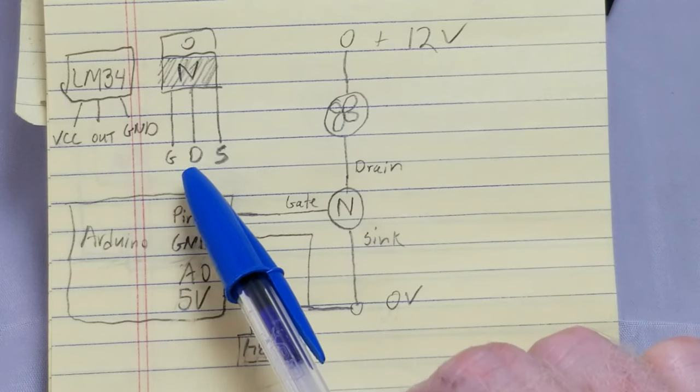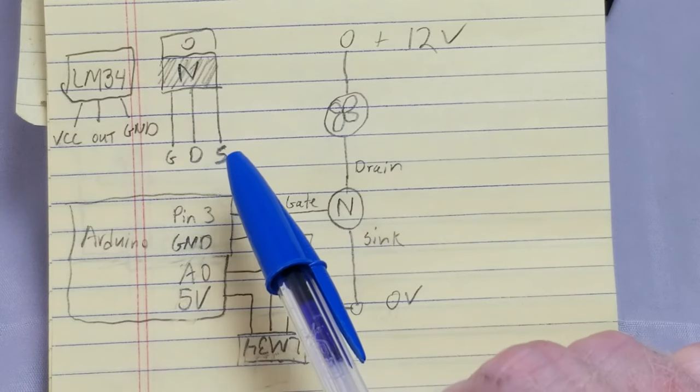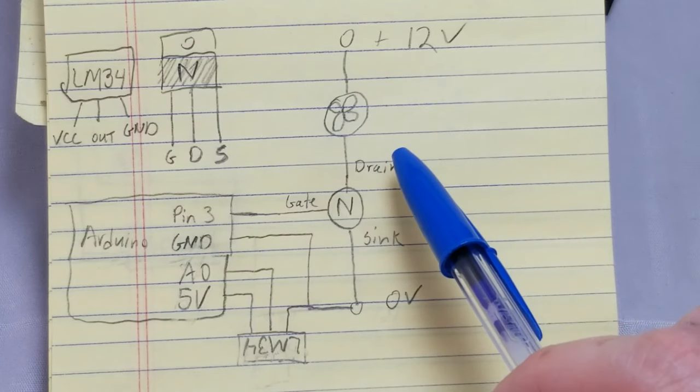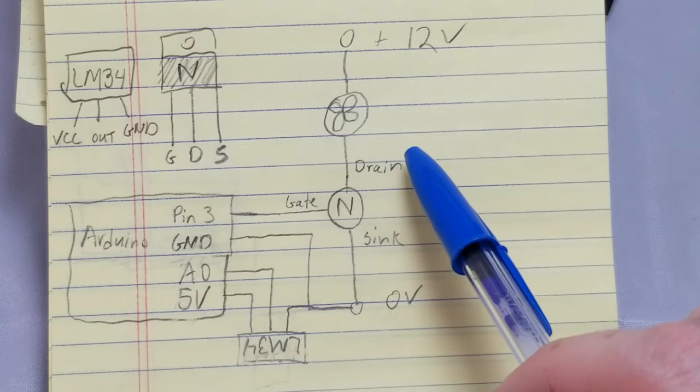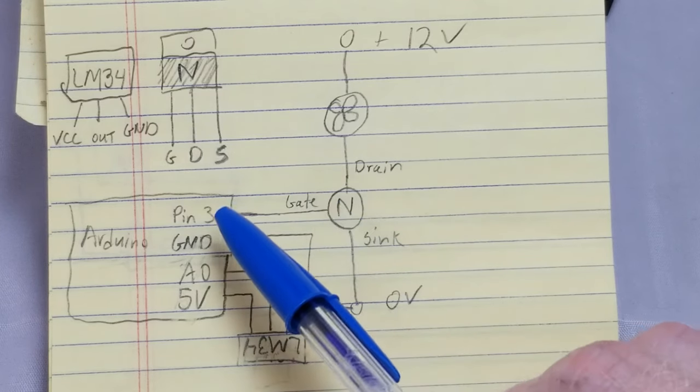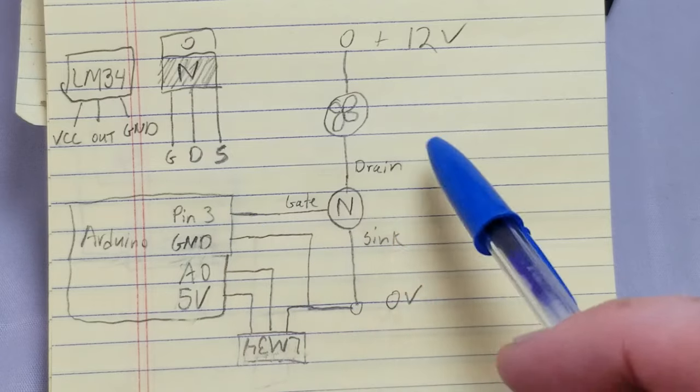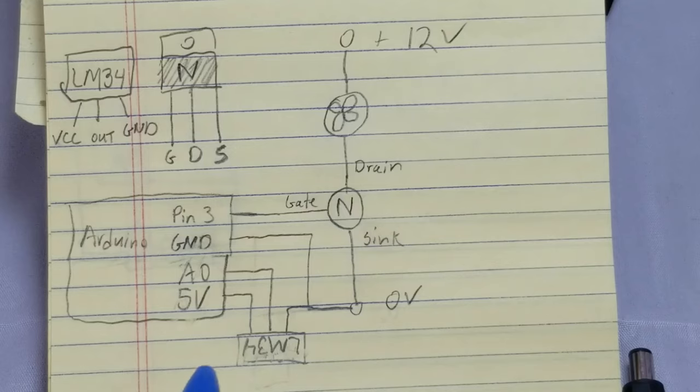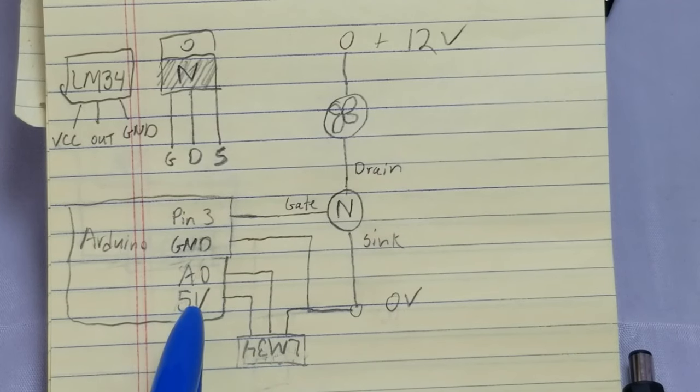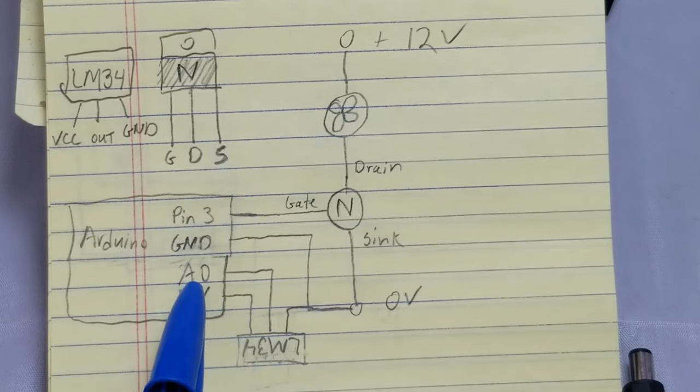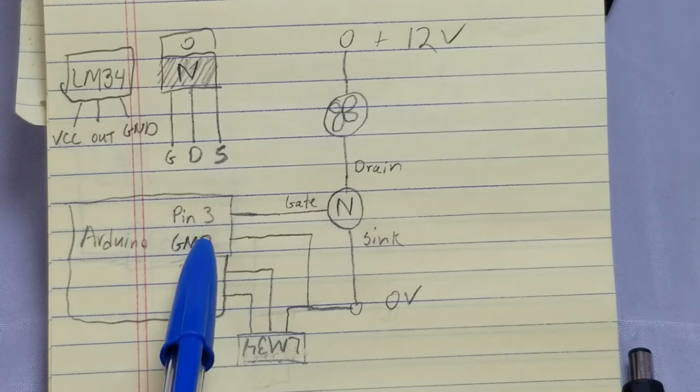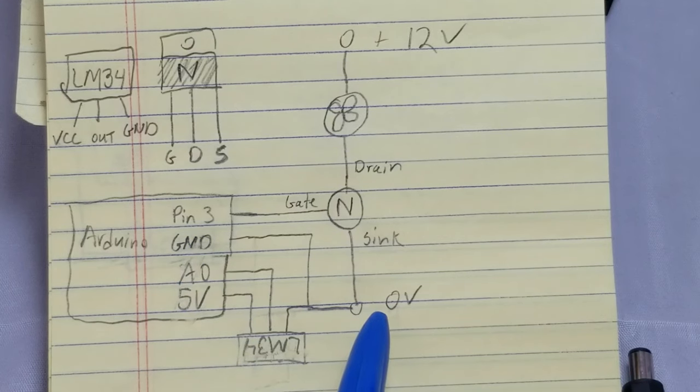The MOSFET I'm using has a gate, drain, and a source in this order. And we're going to be connecting 12 volts to the red wire of the fan, and we're going to connect the black wire of the fan to the drain of the MOSFET. The gate of the MOSFET will connect to Arduino pin 3. And the source will go to the negative battery terminal. For measuring the temperature, we'll connect the LM34 to 5 volts, analog channel 0, and ground on the Arduino. Now, it's very important also that you connect the ground on the Arduino to the negative terminal on the battery so that they have common reference.